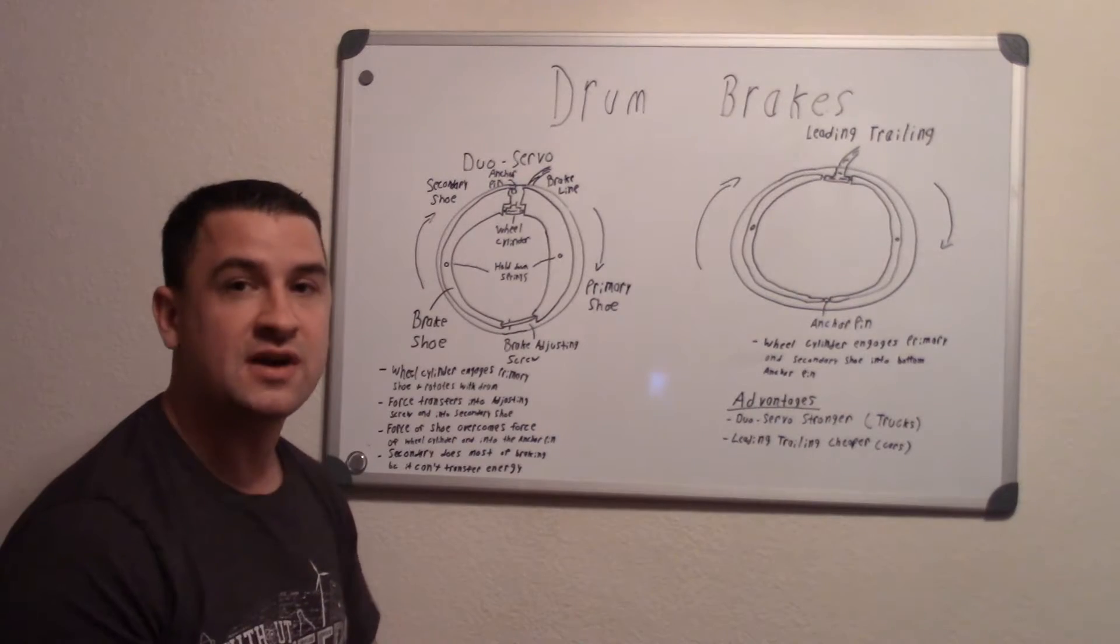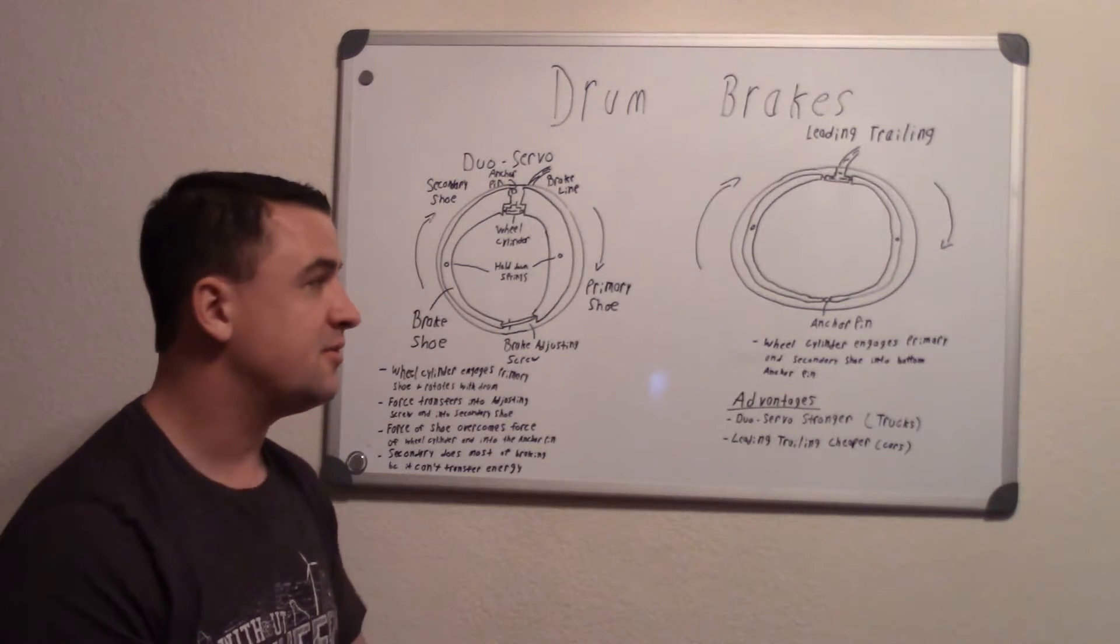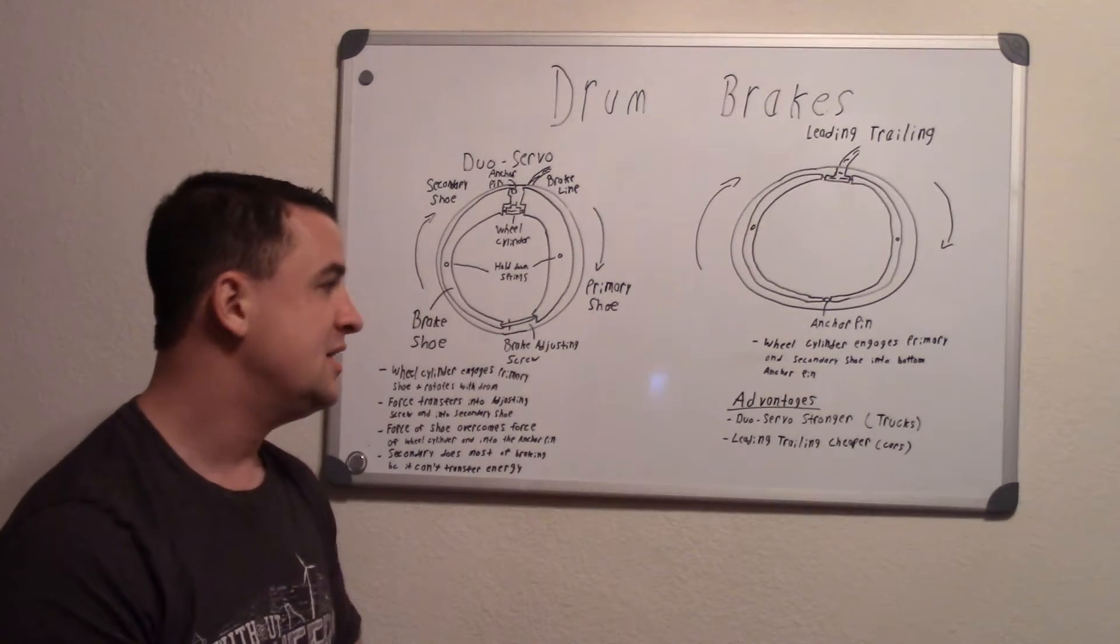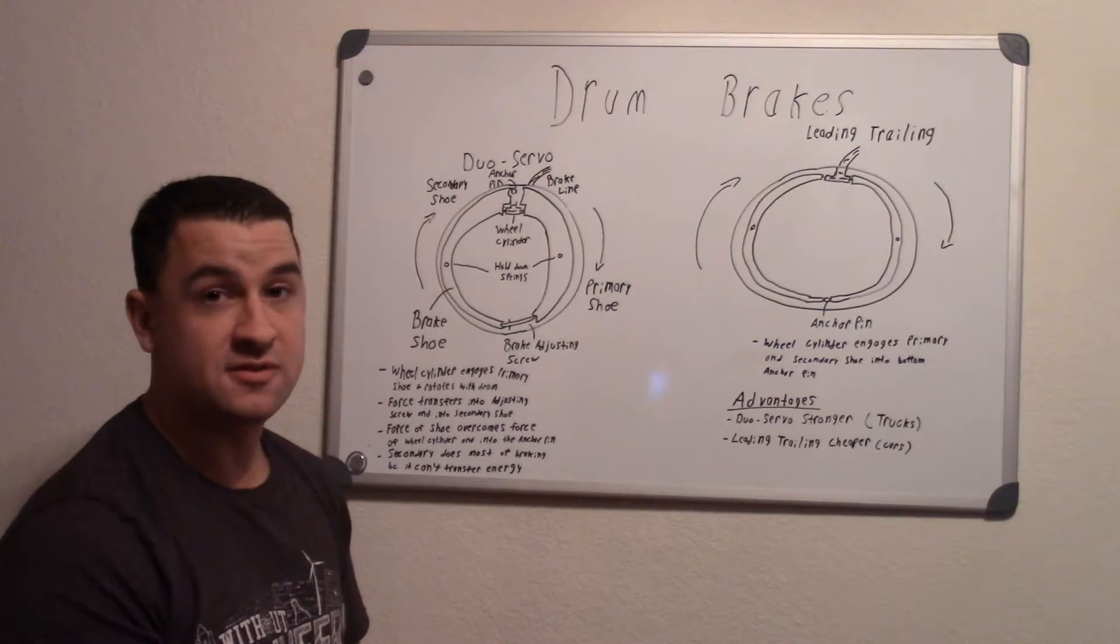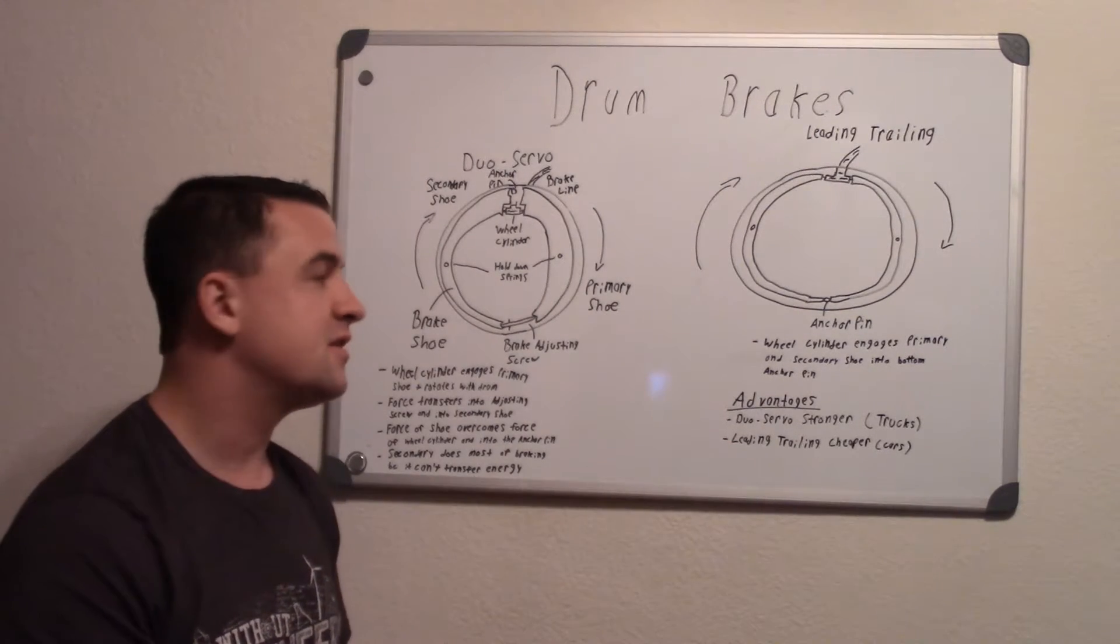Because in a front wheel drive it doesn't really do much of the braking, only about probably 20% in the rear. So you just need cheap drum brakes, which is why they use the drum brakes over the disc brakes, because they're cheaper.